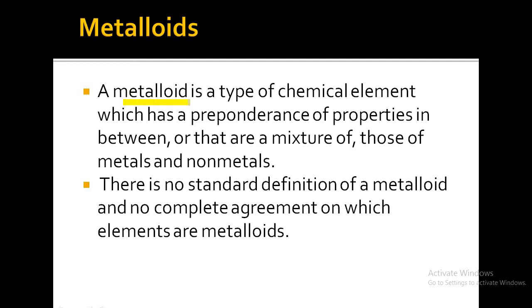Metalloids share the properties of both metals and nonmetals. A metalloid is a type of chemical element which has a preponderance of properties in between, or a mixture of, those of metals and nonmetals. This is why we don't have a standard definition for metalloids and no complete agreement on which elements are metalloids.